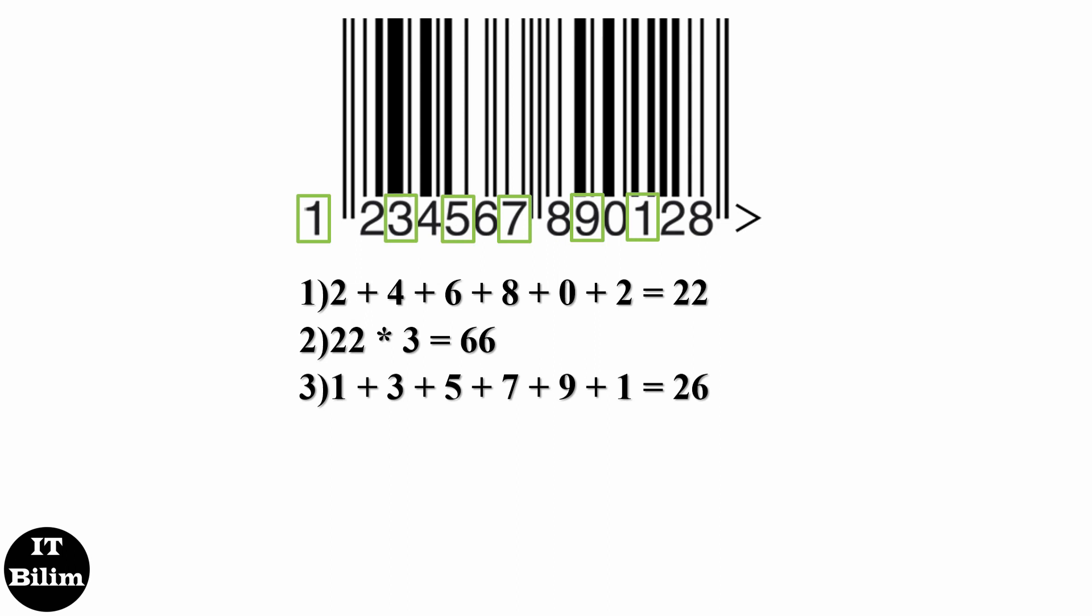Paragraph 3: Add the numbers in odd places, except for the last control digit. 1 plus 3 plus 5 plus 7 plus 9 plus 1 equals 26.